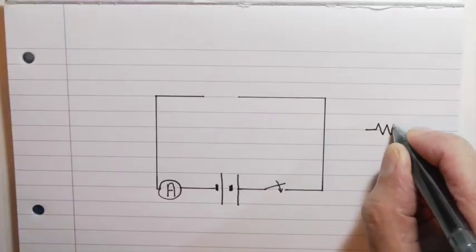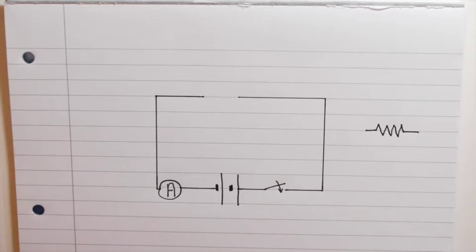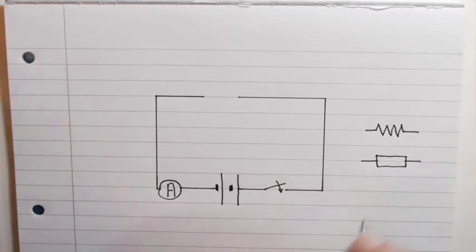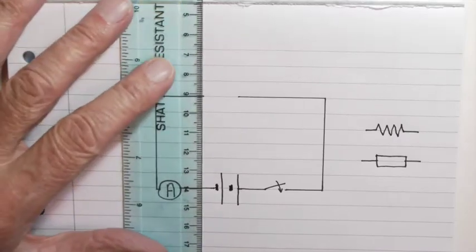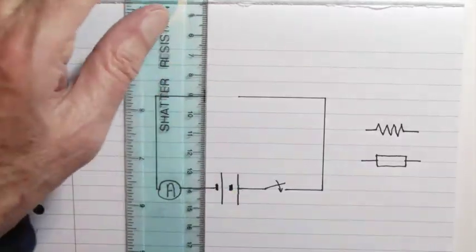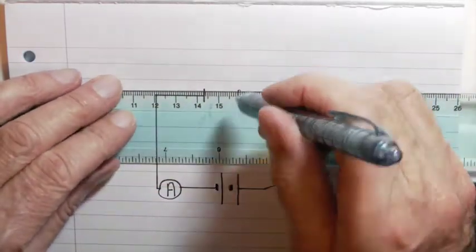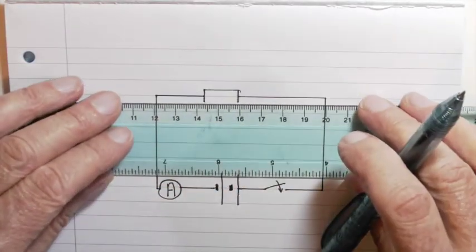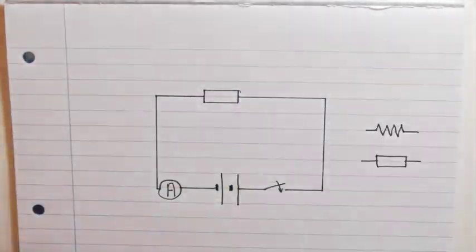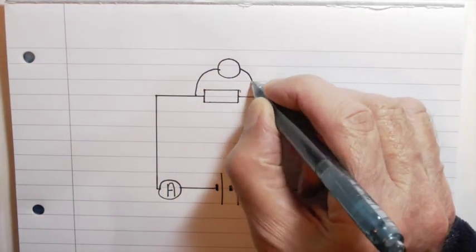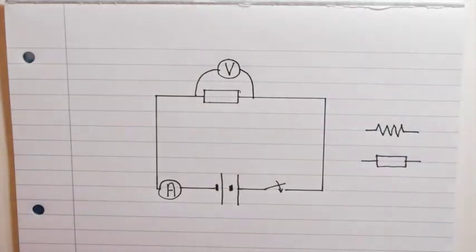To measure the value of a resistor in practice we need a circuit like this. The symbol I'm going to use is the SI unit, the box symbol, rather than the zigzag which you often see still in textbooks. That resistor has to be inserted in the circuit here. The ammeter measures the current flowing through it all the way around the circuit and the voltmeter measures the potential difference across the resistor.